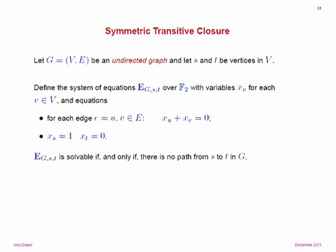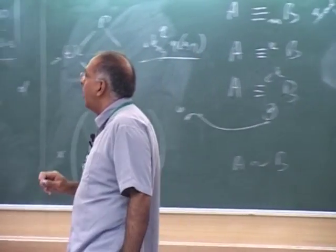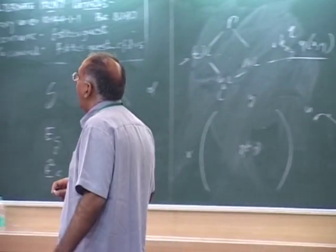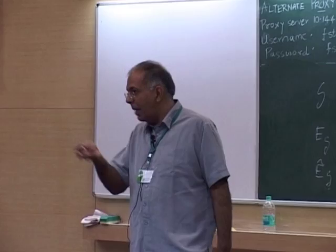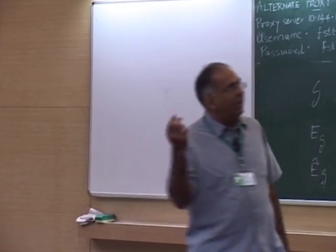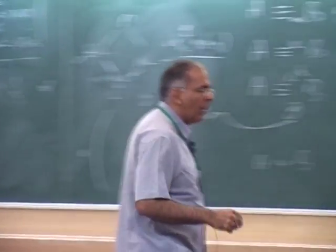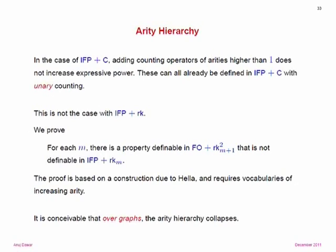You might be able to prove that you cannot do it, especially in the absence of order. But this is where I want to get to. One thing we do prove, which is more of an inconvenience: with counting, when we introduced counting operators, we said this is the number of elements satisfying phi.